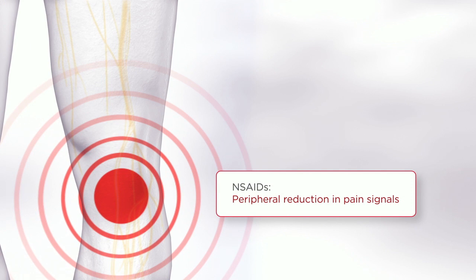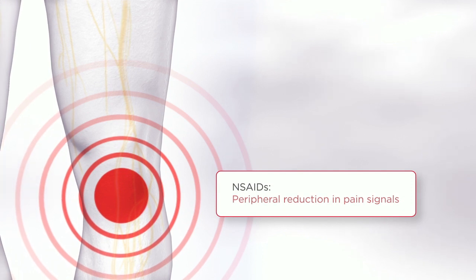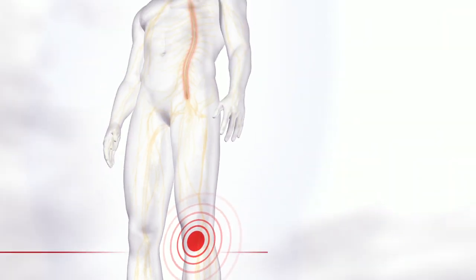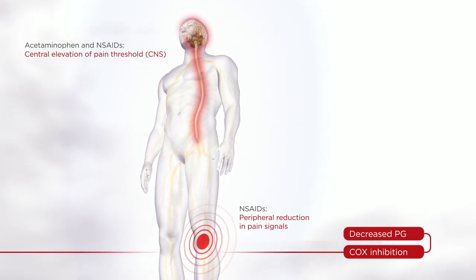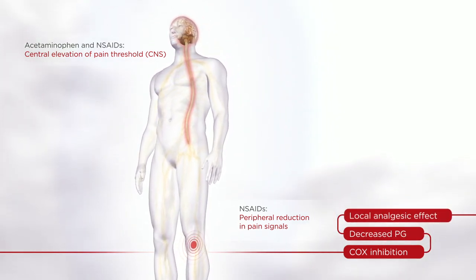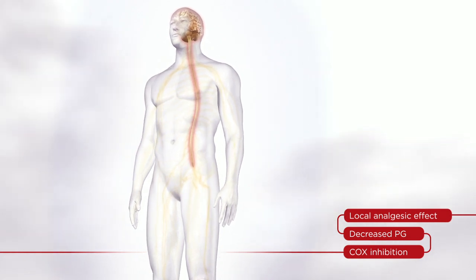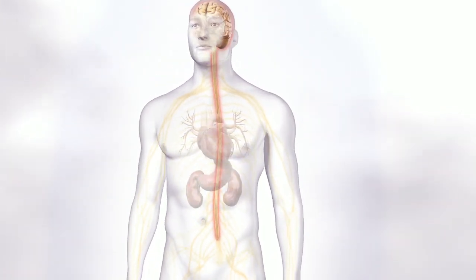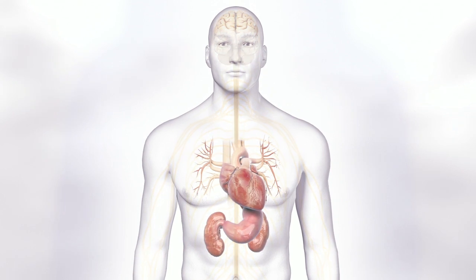At peripheral locations, NSAIDs also inhibit cyclooxygenase and reduce prostaglandin production. These peripheral actions account for their local analgesic effects, as well as for some of the unintended health consequences NSAIDs can potentially cause in the heart, stomach, and kidneys. Let's look at three important examples of these potential consequences and the implications they may have for some of your patients.